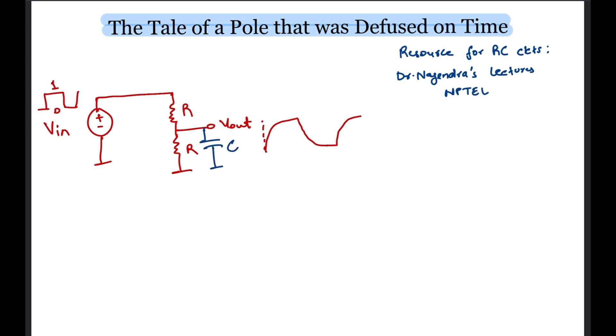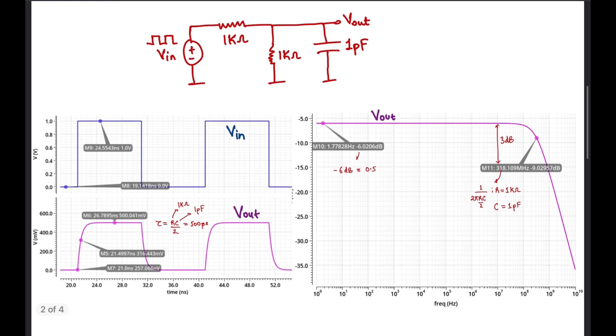For those of you wondering how, we short the input voltage source and look at the effective resistance across the capacitor which is just R in parallel with R, that is R by 2. Thus, the effective time constant associated with the capacitor is RC by 2 and consequently the pole lies at 2 by 2 pi RC. I have attached a simulated waveform of the output for both a transient and an AC analysis for you to verify that the pole frequency matches with the hand calculations and that the transient waveform has a delay due to the pole.